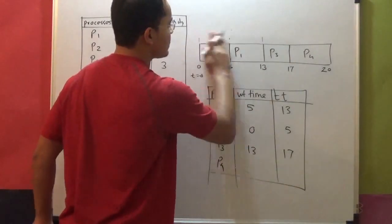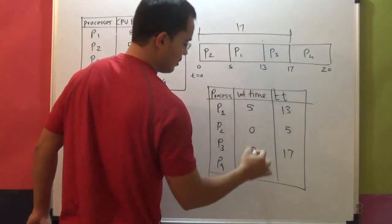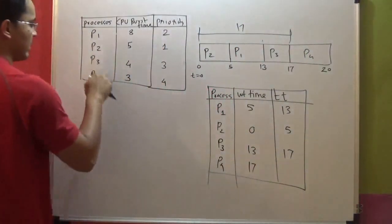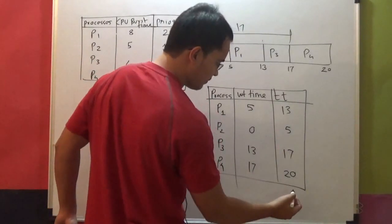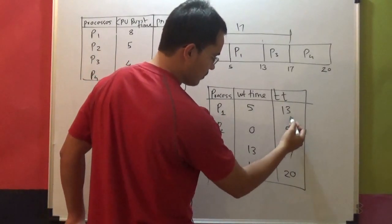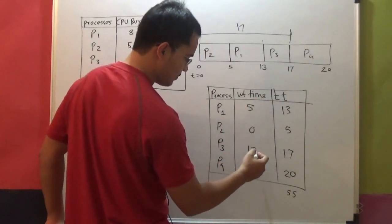And P4, waiting time is 17. Turnaround time is 17 plus 3, which is 20. What is the total of turnaround time? 55. Total of waiting time? 35.